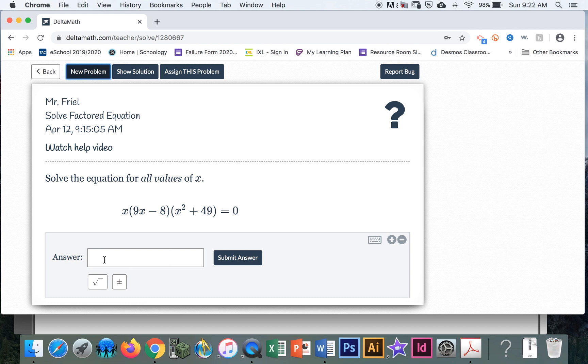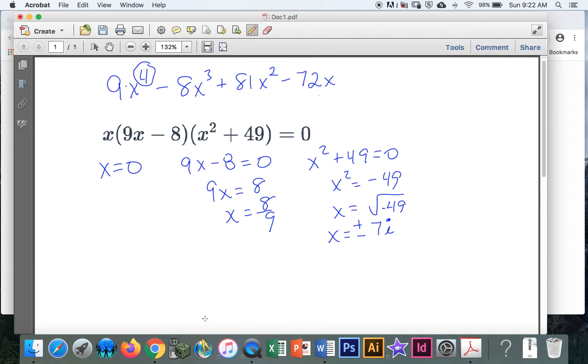All right, so we have one box for answers, but we have three answers we have to put in, which were zero, eight ninths, and plus or minus 7i.